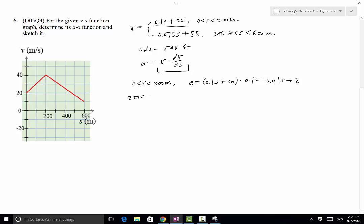And then when s is between 200 and 600 meter, same thing, a equals v·dv/ds. And v is given by negative 0.075s plus 55, this equation right here, multiplied by dv/ds. And again, according to this equation, dv/ds equals negative 0.075. And this equals 0.005625s minus 4.125.